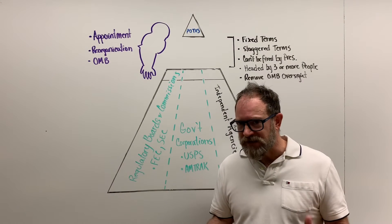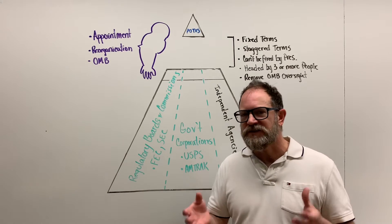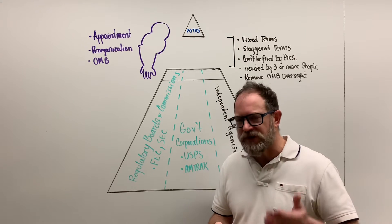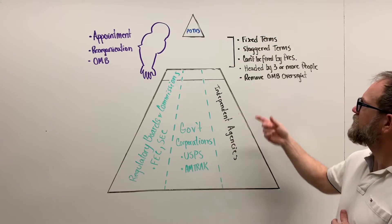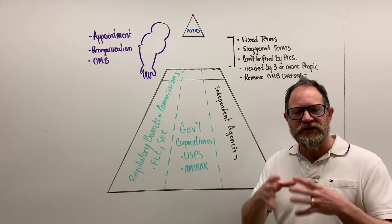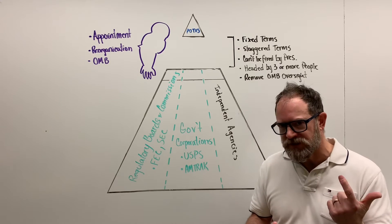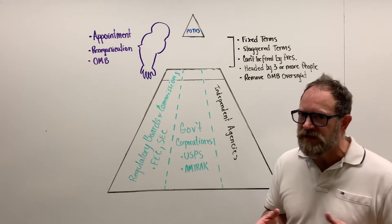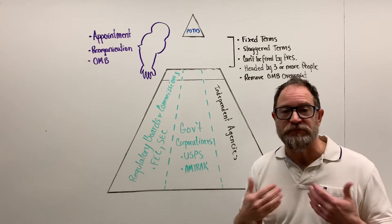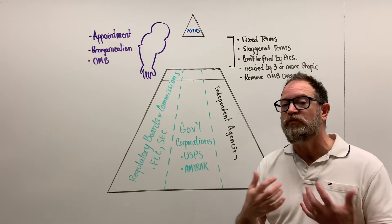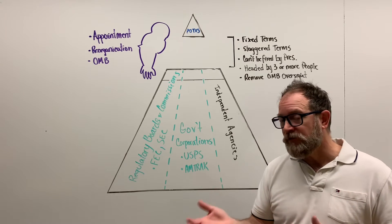So how do we create that freedom from presidential control? Primarily, when these entities were created, Congress established features allowing them to be free. First, the heads of these entities are often a commission or board governing the agency, made up of three or more people - not just one person. They still might be appointed by the president, but they have a fixed term and a staggered term. On a board of three, as president I might only have the opportunity to appoint one person, with the other two appointed by presidents before or after me.